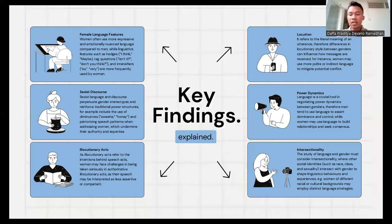Last but not least is intersectionality. The study of language and gender must consider intersectionality, where other social identities such as race, class, and sexuality intersect with gender to shape linguistic behaviors and experiences. For example, women of different racial or cultural backgrounds may employ distinct language strategies.